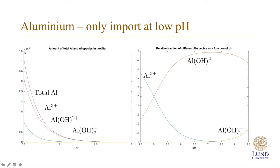And we should look at the number on the y-axis, 5.4 times 10 to the minus 8 moles per liter. That means that at a pH of 5.5, the total concentration of aluminum is very, very low. Still, Al3 plus is the most important one of the different species.